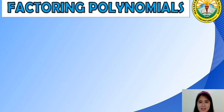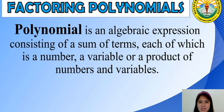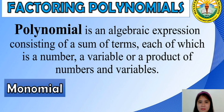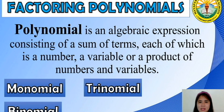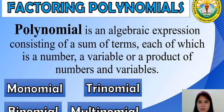Now, what about polynomials? A polynomial is an algebraic expression consisting of a sum of terms, each of which is a number, a variable, or a product of numbers and variables. Polynomials can have one term, two terms, three terms, or four or more terms. These terms have their own specific names: monomial for one term, binomial for two terms, trinomial for three terms, and multinomial for four or more terms.